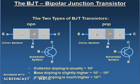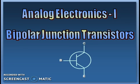Let us quickly understand the meaning of the words Bipolar Junction Transistor. The word Bipolar means the current through the BJT is because of both carriers, i.e. holes and electrons. Junction stands for the fact that inside the BJT there is a PN junction. And Transistor stands for transfer of resistance.